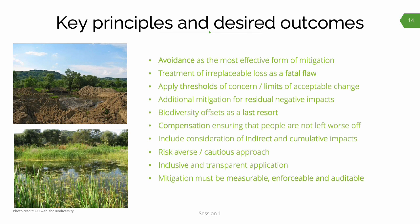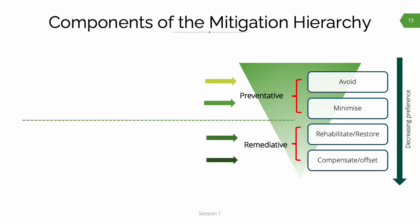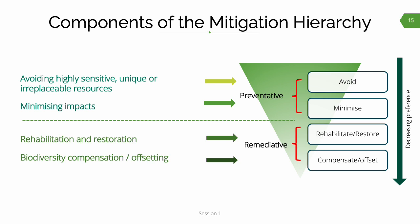These key principles and outcomes will be described in more detail in subsequent sessions. This last slide is intended to leave you with a visual depiction of what the mitigation hierarchy model looks like. There are two things to stress: firstly, the important distinction between the preventative and remediative components of the hierarchy — preventative being avoidance and minimization, and remediative being rehabilitation or restoration and compensating or offsetting. Second, the triangular shape is indicative of the need to focus first and foremost on avoidance in the pre-planning or pre-application phase of a project, as this is the most effective solution for protecting biodiversity.